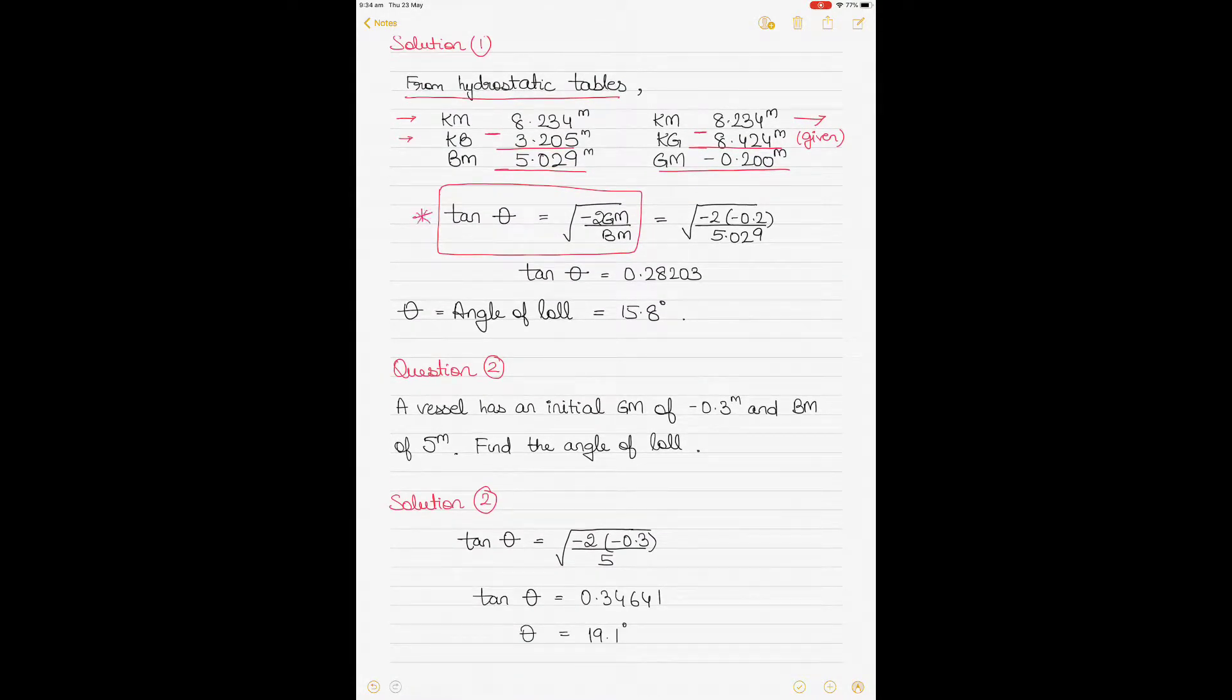So these are the only two values you need. Put them in the formula here where tan θ equals under root of minus 2 GM divided by BM. So this is GM and you will retain the negative sign, divided by BM. So if you solve the equation, you should be getting tan θ equals 0.28203, which will give you tan inverse in the calculator. Tan inverse of 0.28203 will be θ, which is angle of loll, which is equal to 15.8 degrees.